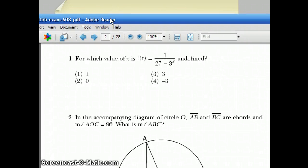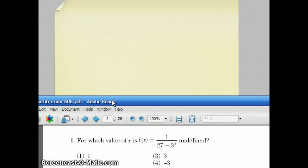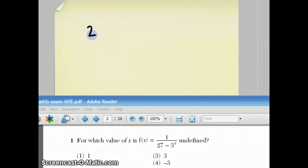Question number 1 says, for which value of x is f(x) = 1/(27 - 3^x) undefined? And there's four choices. Well, a fraction is undefined when the denominator equals 0. So what they're asking you to do here is to solve the equation 27 - 3^x = 0.